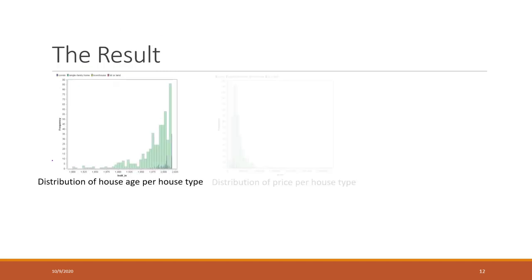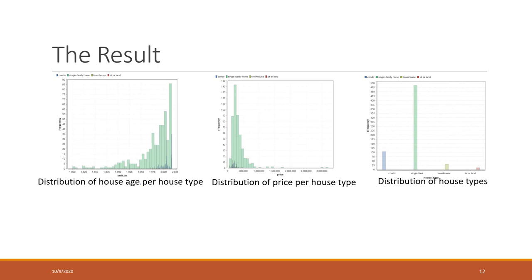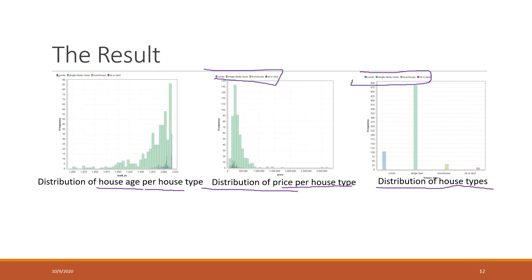What we really need is: the probability of the house being built in a given year per house type, the probability of the price per house type, and the probability of the house type itself. Those are the three variables needed for classification. Based on the data, we can obtain those distributions and convert them to probabilities.